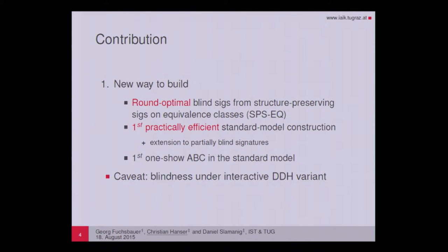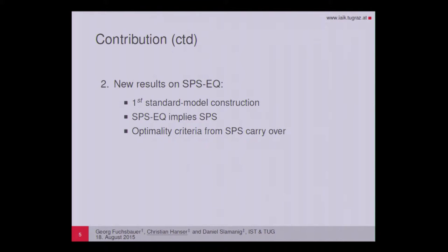In this talk, we will first present a new way to build round-optimal blind signatures. We build them from structure-preserving signatures on equivalence classes, which were introduced at last Asiacrypt. This is the first practically efficient standard model construction. We will also give an extension to partially blind signatures and show how to build one-show ABCs in the standard model using a similar approach. One main caveat is that blindness holds under an interactive variant of the DDH assumption.